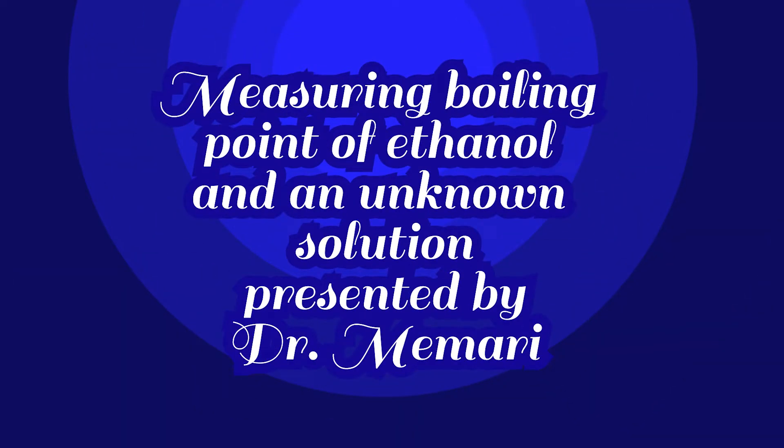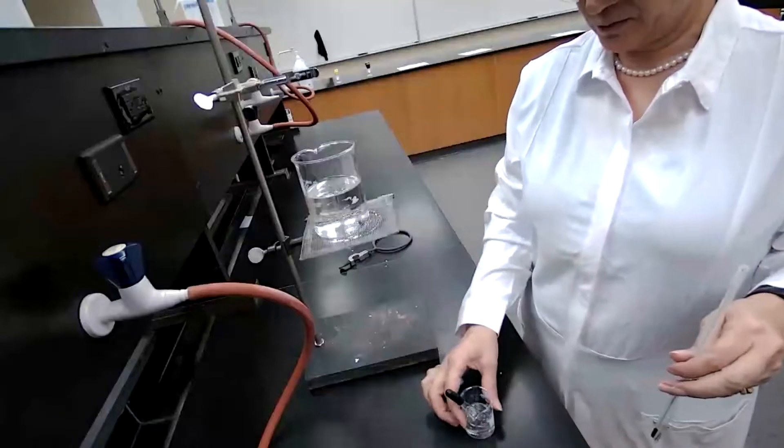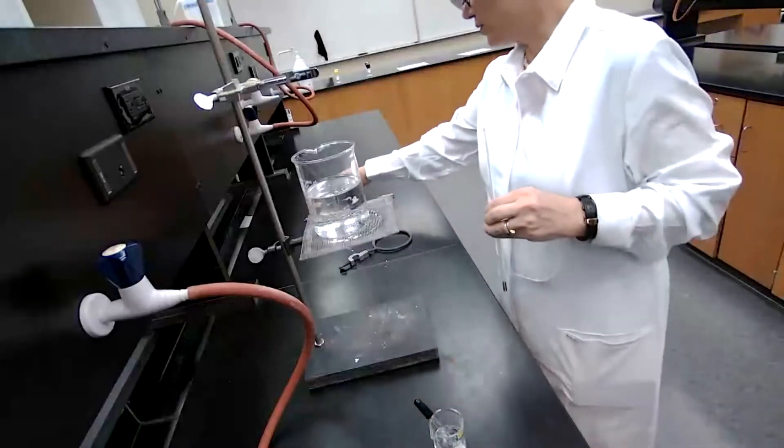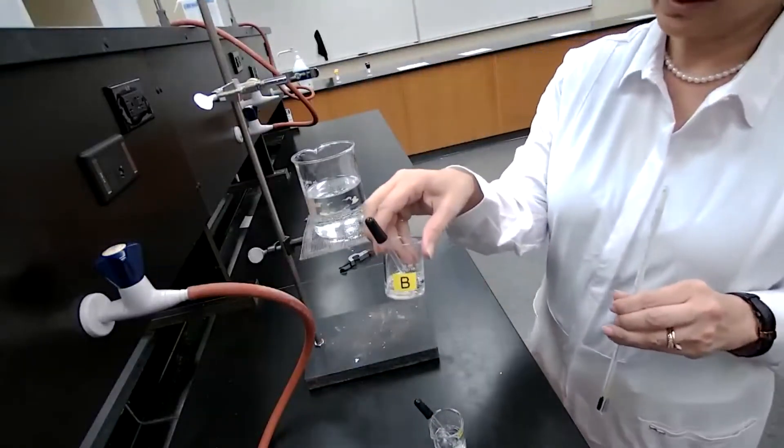As part of experiment one, we are measuring a boiling point. We are going to measure the boiling point of ethanol, and then we are going to measure the boiling point of an unknown solution.